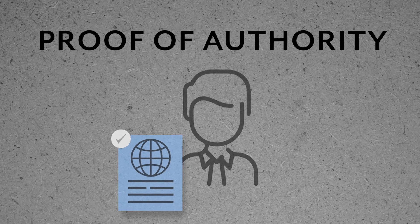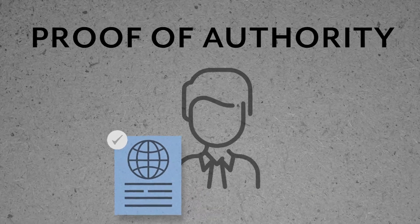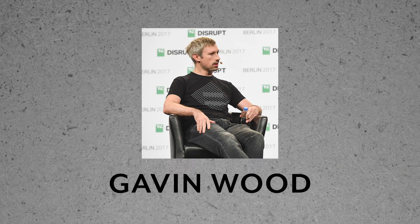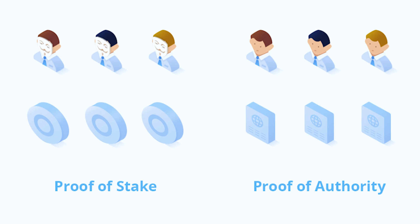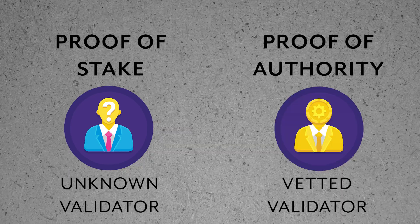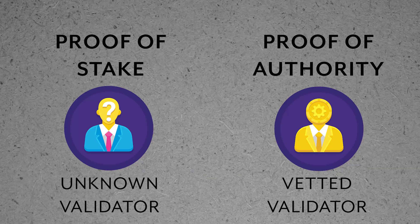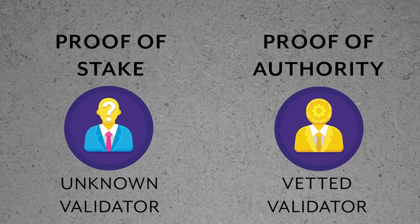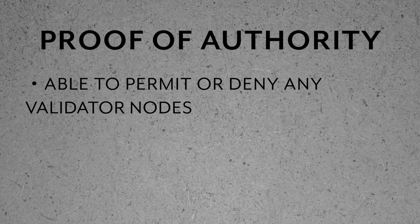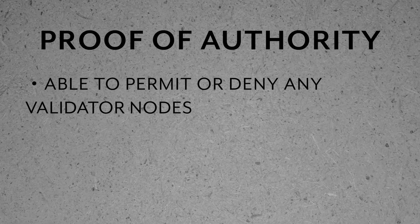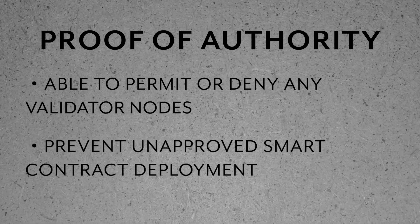Proof of authority is one of the newer consensus models — a consensus algorithm that delivers an efficient solution for blockchains. The term was first coined in 2017 by Gavin Wood, a co-founder of the Ethereum blockchain. Proof of authority is a modified form of proof of stake, where instead of anyone being able to stake their coins and become a validator, a validator in a PoA blockchain is vetted. That means the identity of the validator is known, and they go through an extensive background check.